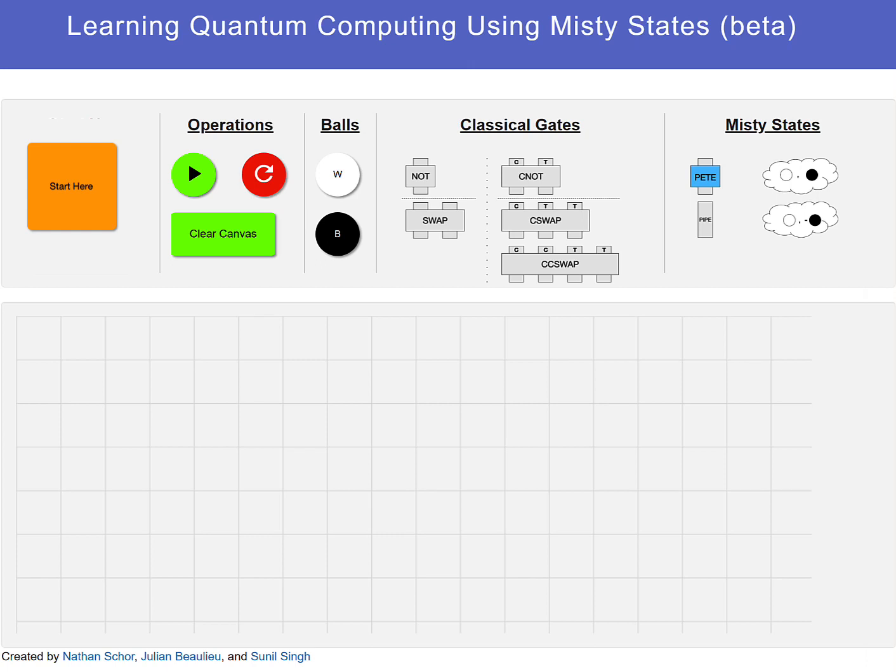Welcome back. Before getting to the topic of this video, I'd like to point out in online meetups and the like, it's customary to give the audience a group label appropriate to the topic of interest. Since here we're discussing how MISTI states are useful for learning quantum computing, it seems natural to refer to ourselves as Mysterians.